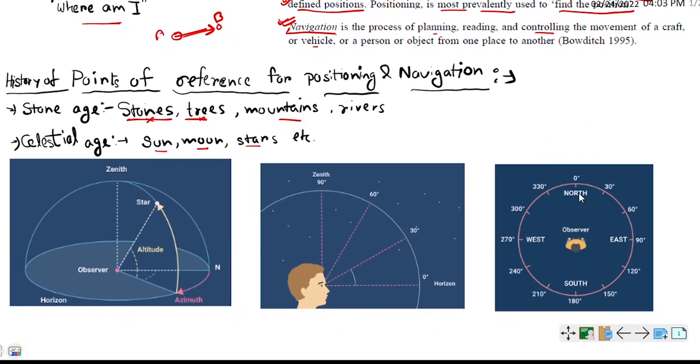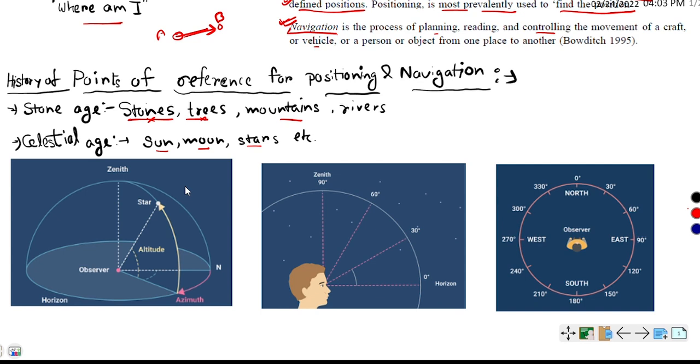Let us see. Suppose this is one star, this is the observer's meridian. If I draw this observer's meridian here, this is zenith and this is the horizon. Horizon means where the sky meets the land. Then this is the horizon, and suppose this star is X. If I draw this star here, X.